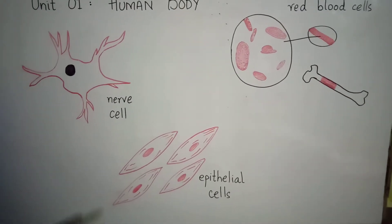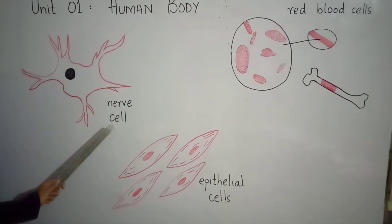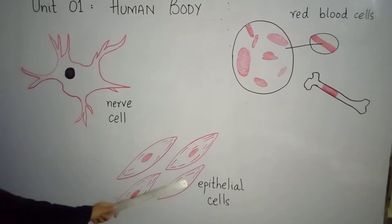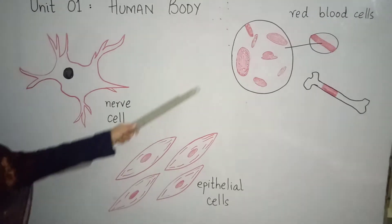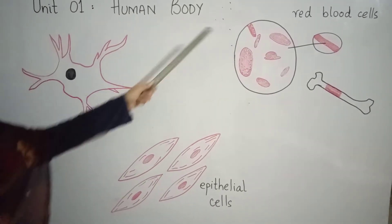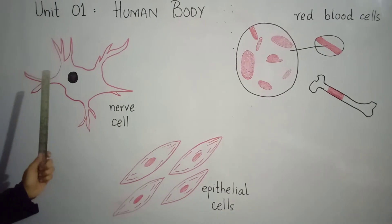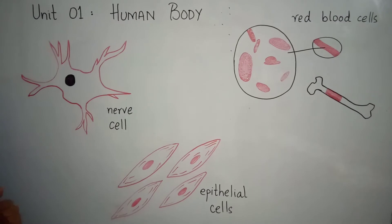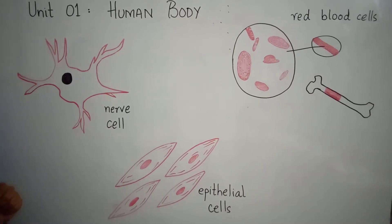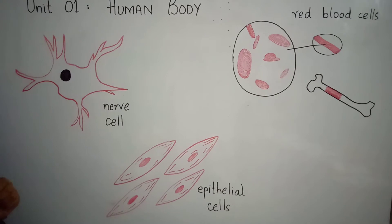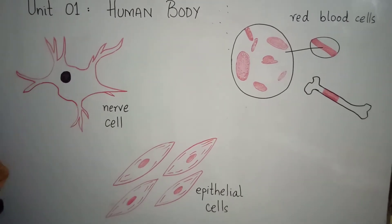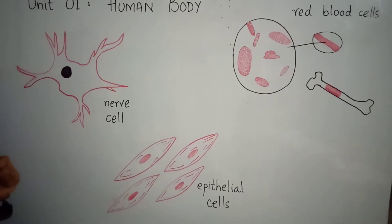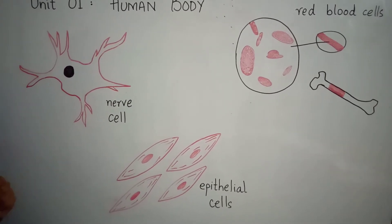Our body is made of cells. These are NERD cells. These are epithelial cells. And these are red blood cells. Just as bricks make a house, all our organs — our stomach, liver, heart, brain — are made up of small cells. All those cells are of the same type and they are doing the same job. So if someone asks you: what is the basic unit of the human body? You will say: cell.